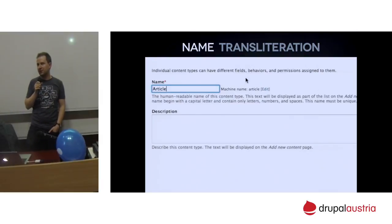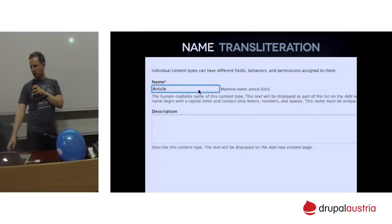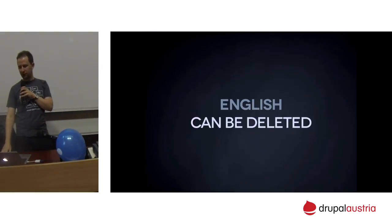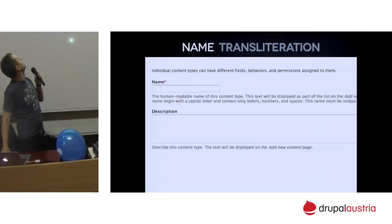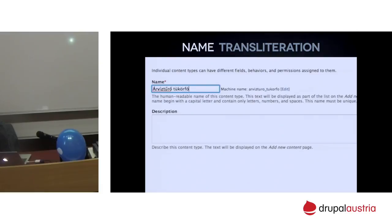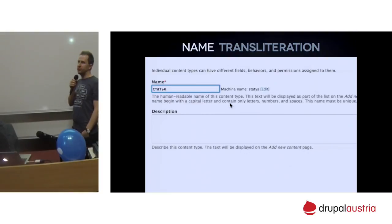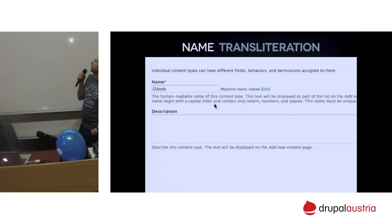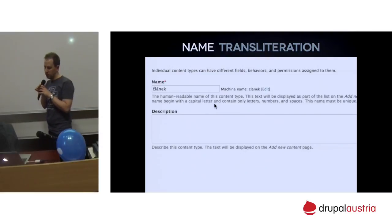Another thing we solved is transliteration. It's built in for machine names — if you enter something with foreign characters, like a content type name in Hungarian, it will be transliterated to English characters on the fly. This is not yet integrated with file uploads or path aliases — that would be in contrib or 8.1/8.2 — but it's built in for machine names.